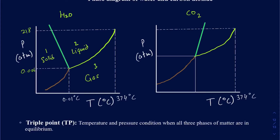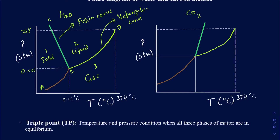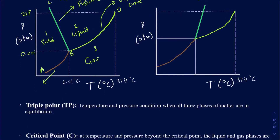Labeling key points as A, B, C, and D — line B-C is the transition between solid and liquid, also called the fusion curve. Curve B-D is the transition between liquid and gas, called the vaporization curve. And curve A-B, shown in brown, is the transition between solid and gas, called the sublimation curve.